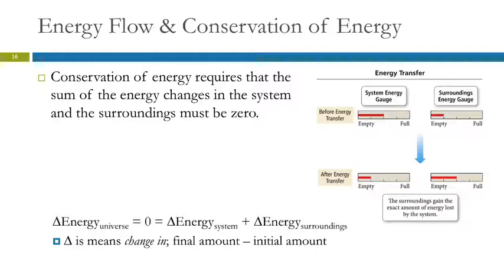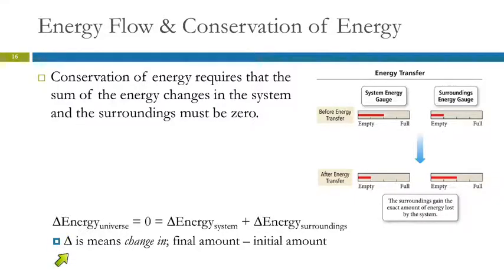Conservation of energy requires that the sum of energy changes between the system and the surroundings has to be zero. So the change in energy for the entire universe equals zero — that will equal the change in energy for whatever system we're studying plus the change in energy for the surroundings, which is everything else. Those have to add up to zero. This triangle is a Greek letter delta, and we use that to represent change — almost always the final amount minus the initial amount.